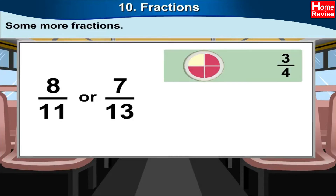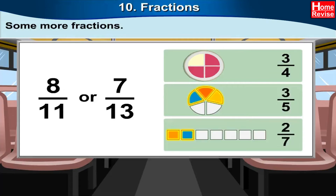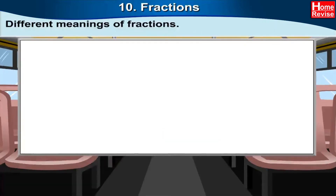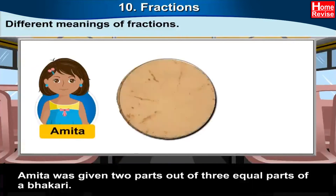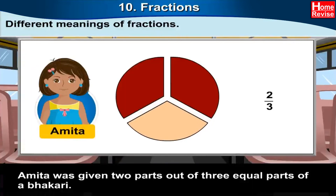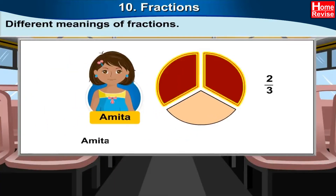You can work out the meaning of fractions such as eight upon eleven or seven upon thirteen, just like the fractions three upon four, three upon five, and two upon seven. Amita was given two parts out of three equal parts of a bhakri. This means Amita was given two thirds of one bhakri.